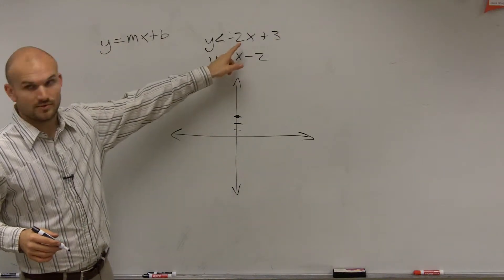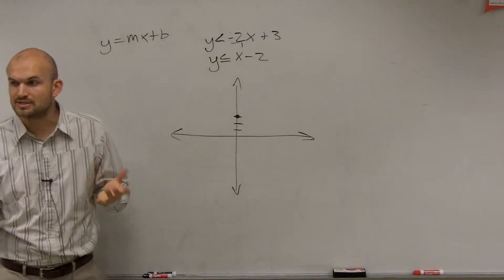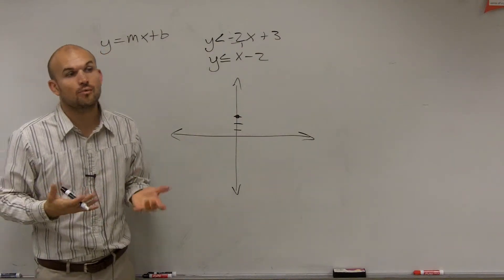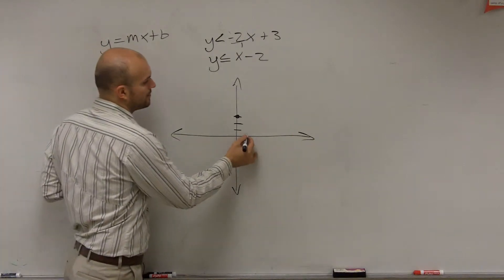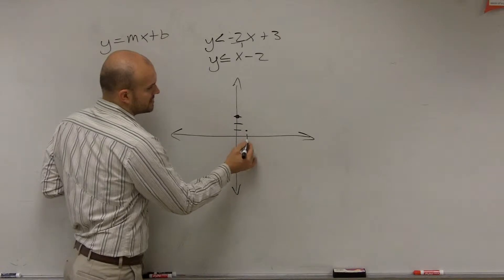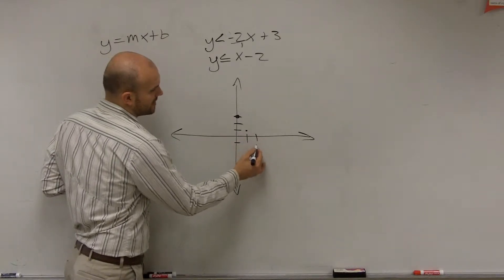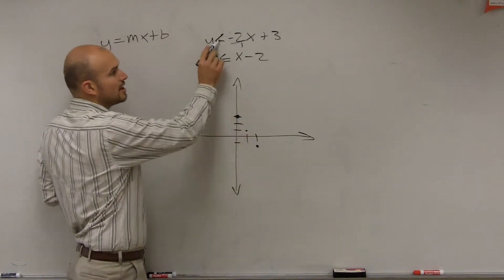Then the slope of this one is negative 2 over 1, right? We want to write our slope as our ratio, change in y over your change in x. So since it's negative 2 over 1, I'm going to go down 2 to the right 1. Down 2 to the right 1. So you can see you're going to have a shape of a line that's going to look like this.